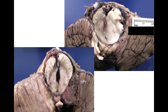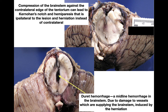Two other complications are Kernohan's notch and a Duret hemorrhage. The bottom left shows a Duret hemorrhage — a midline hemorrhage in the brainstem. Due to herniation of the brainstem and kinking of vessels within it, those vessels are damaged and produce this midline hemorrhage. In practice, it's not always a clean midline streak; it can appear as a hemorrhage in the midbrain that isn't perfectly centered.